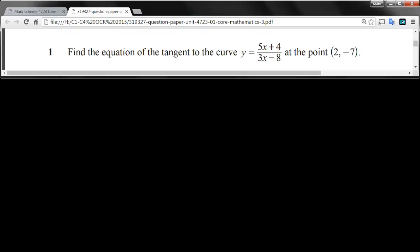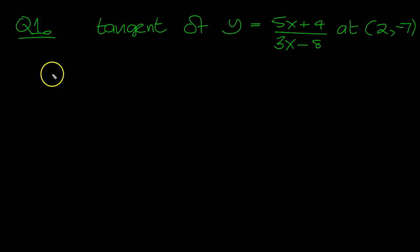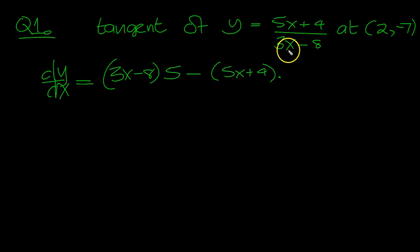Question 1. Let's have a look at this then. dy/dx is the quotient rule: v times du/dx minus u times dv/dx all over v squared. OK.